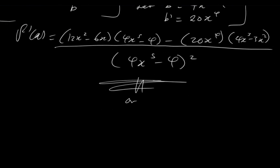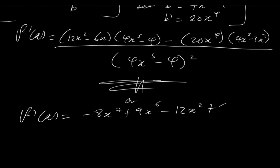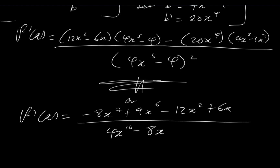If you do expand it out, f prime of x will be minus 8x to the 7th plus 9x to the 6th minus 12x squared plus 6x, over the denominator which is a binomial squared: 4x to the 10th minus 8x to the 5th plus 4. You can leave your answer in either form, though I mostly prefer leaving it in the factored form.